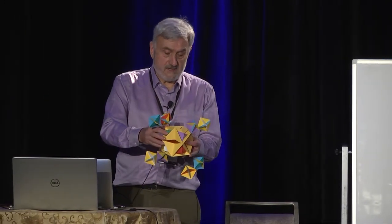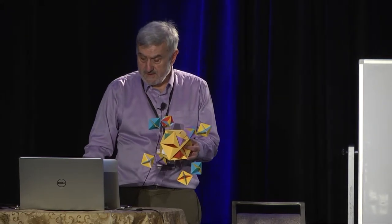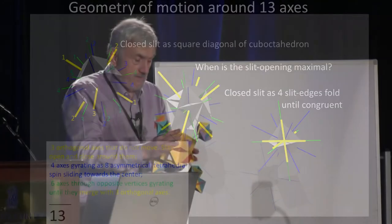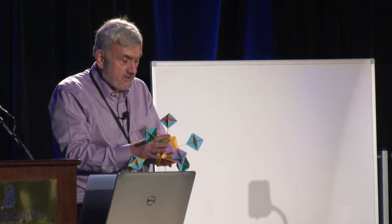So I decided to examine the movement. The movement — you saw it — but it's too quick. So I built this model that has the axis. You can see 13 — three orthogonal ones — going through the slits, and they stay stable. This thing gyrates and closes. And then four axes: you get the eight tetrahedra that spin around those axes as they slide towards the center.